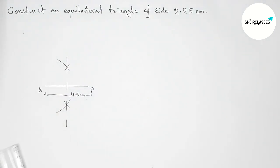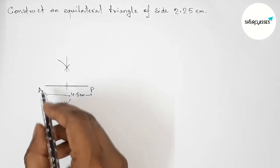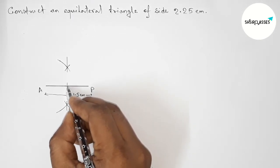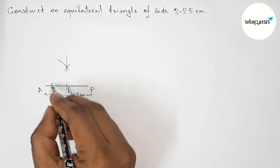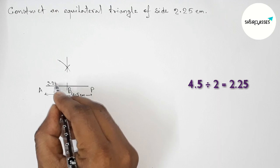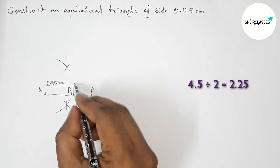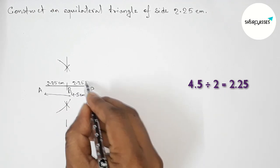So now taking here a point, so taking point here B. Okay, so here AB that is 2.25 centimeter and BP also 2.25 centimeter.